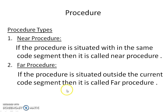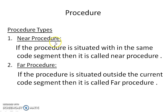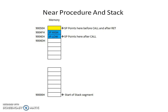There are two types of procedures: NEAR procedure and FAR procedure. If the procedure is situated in the same code segment, it is called a NEAR procedure. If the procedure is situated outside the current code segment, it is called a FAR procedure. I will explain how the CALL instruction gets executed and how control transfers back to the mainline program with the help of a diagram.